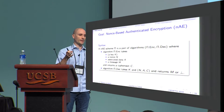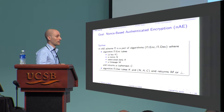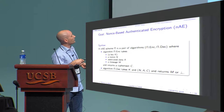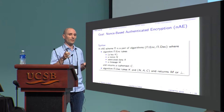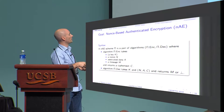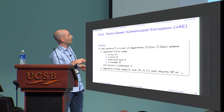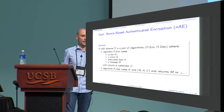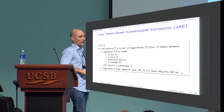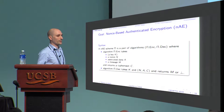What we want to construct is a nonce-based authenticated encryption scheme. It takes a key, a nonce N, some associated data which will only be authenticated (not encrypted), and a message M, and it returns a ciphertext C. The decryption algorithm takes the nonce, the associated data, and the ciphertext, and returns either a message or a symbol indicating the ciphertext is invalid. Typically the nonce should not be repeated, but sometimes this cannot be assumed.